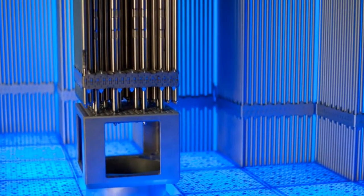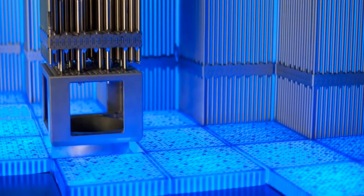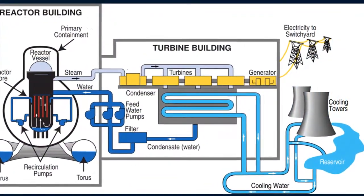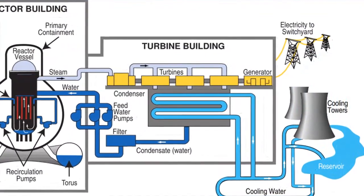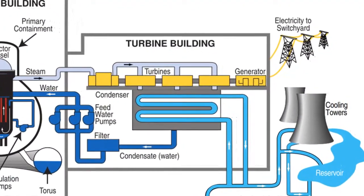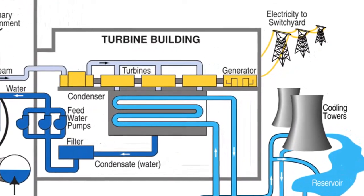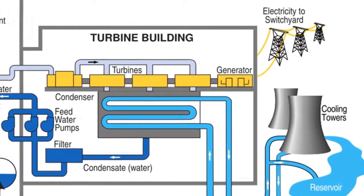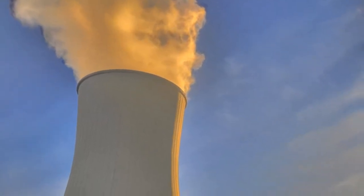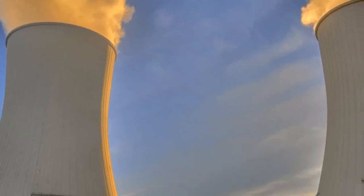The energy produced is transported from the reactor and used to drive steam turbines that turn electrical generators, which is similar to what occurs in most conventional power plants. Uranium-235 is the only naturally occurring isotope that is readily fissionable, and is therefore the primary fuel used in nuclear power plants.